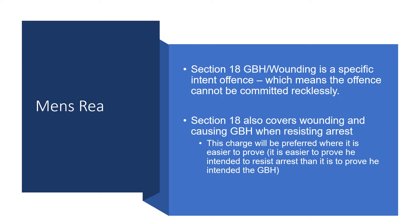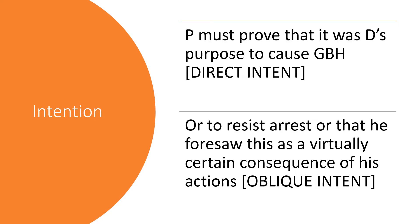Section 18 also covers wounding and causing GBH when resisting arrest. The charge will be preferred where it is easier to prove — for example, it is easier to prove intent to resist arrest than intent to cause GBH. The prosecution must prove that it was the defendant's purpose to cause GBH or to resist arrest, or that he foresaw this as a virtually certain consequence of his actions — that is oblique intent.